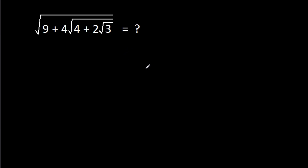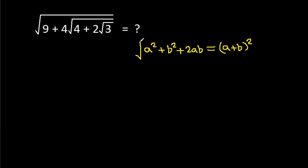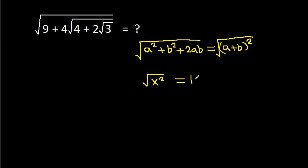We know that a squared plus b squared plus 2ab is equal to (a + b) squared. So the square root of a squared plus b squared plus 2ab equals the square root of (a + b) squared, and since the square root of x squared equals mod x, it will be equal to mod(a + b).